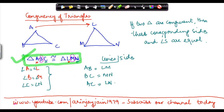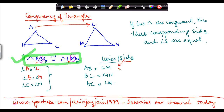Many times you will come across problems that won't directly tell you which sides are equal — they will ask you to find out whether the triangles are congruent. To do that, you find out whether the sides and angles of two triangles are equal, and based on certain defined parameters for congruency, which we will discuss in subsequent videos, we determine if they are congruent. From a perspective of congruency: if two triangles are congruent, their corresponding sides and angles are equal — and conversely, if the sides and angles of two triangles are equal, then those triangles are congruent.